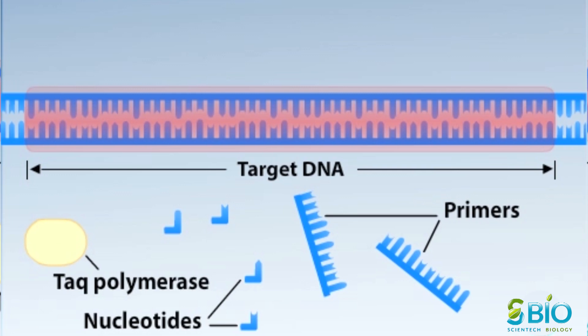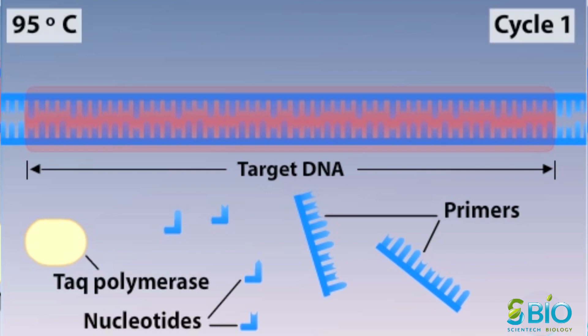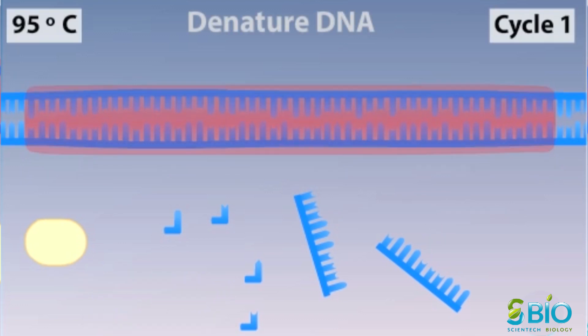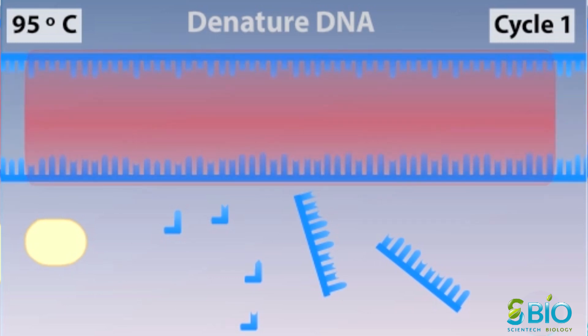A PCR reaction lasts several hours and typically consists of 20 to 35 repeating cycles. A cycle begins by heating the reaction mixture to 95 degrees Celsius. The heat denatures the DNA, breaking the hydrogen bonds that hold the strands together.